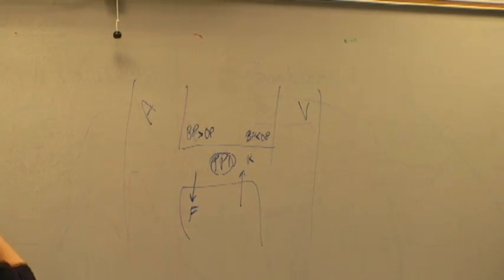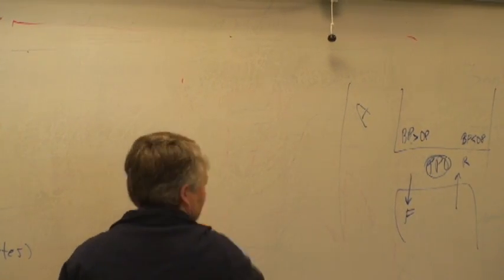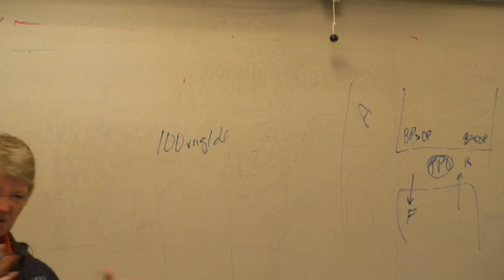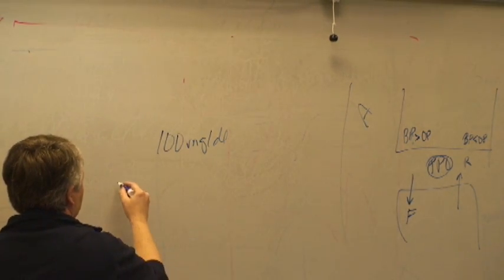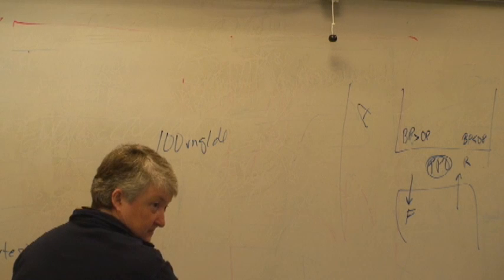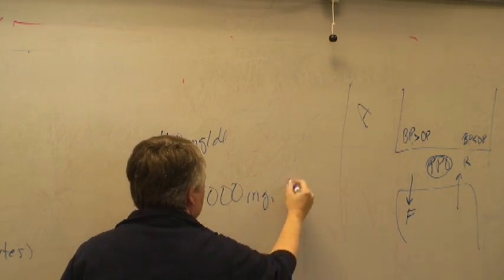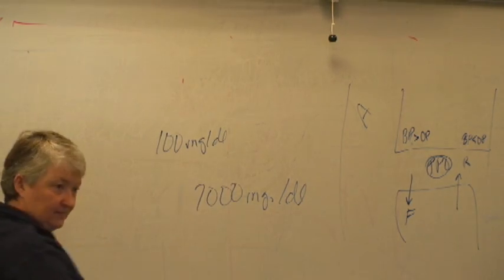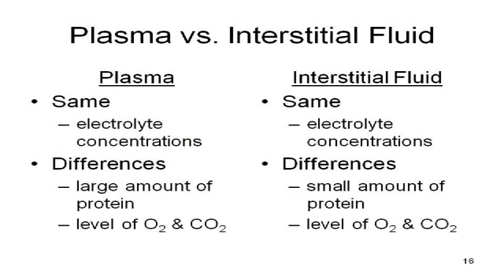If we think about glucose, you normally have about 100 milligrams per deciliter in your blood — somewhere between 70 to 120. You normally have about 7 grams of protein per deciliter — that's 7,000 milligrams per deciliter of protein. See how much more protein there is than everything else? The big difference between the plasma and the interstitial fluid is basically the protein: lots and lots of protein in the plasma, but very little protein in the interstitial fluid.